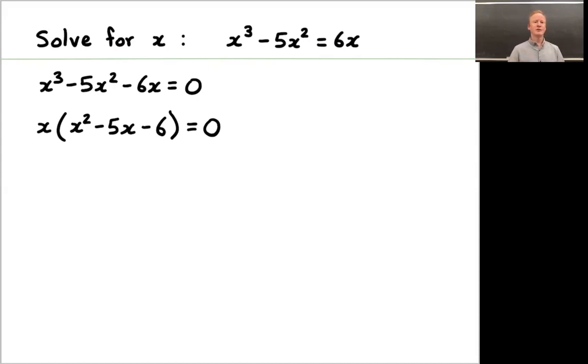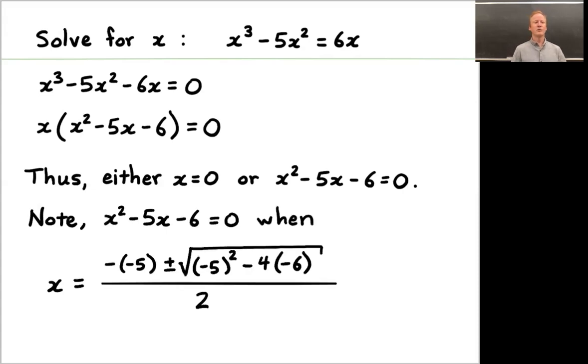That is, either x was zero or the quadratic polynomial was zero. Well, x is zero. That's simple enough. A little bit more complicated, what does it mean for x squared minus 5x minus 6 to be zero? For that, you can use the quadratic formula. The quadratic formula tells you that x is minus negative 5 plus or minus the square root of minus 5 squared minus 4 times negative 6, and then you divide all of that by 2.